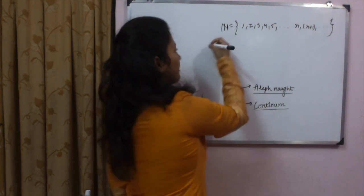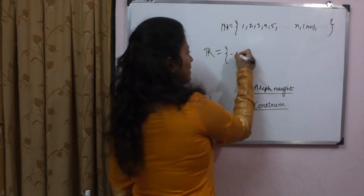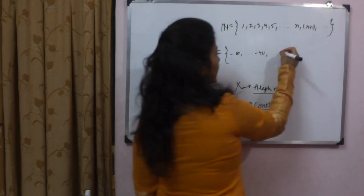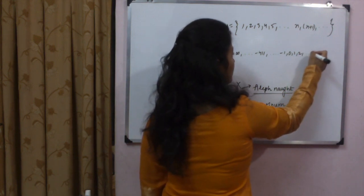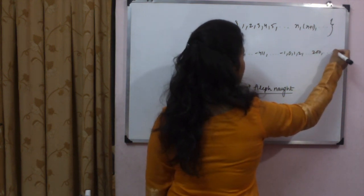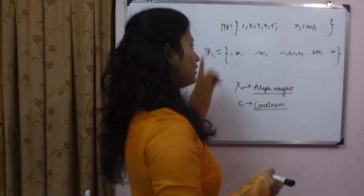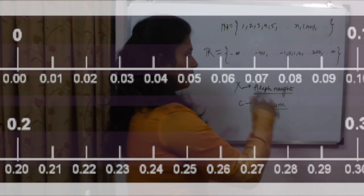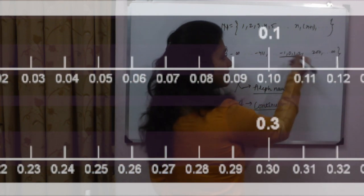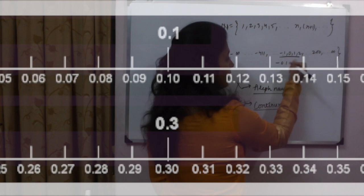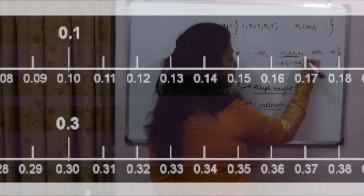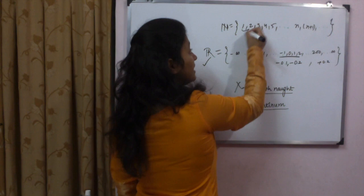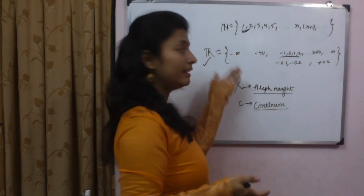Now what about real numbers? Real numbers are very numerous. They include all negative numbers like minus 4, minus 1, then 0, then 1, 2, 200, 300, going all the way to infinity in both directions. Additionally, numbers like minus 0.1, minus 0.2, plus 0.2 — all decimal numbers also come in. So real numbers are a much larger set.